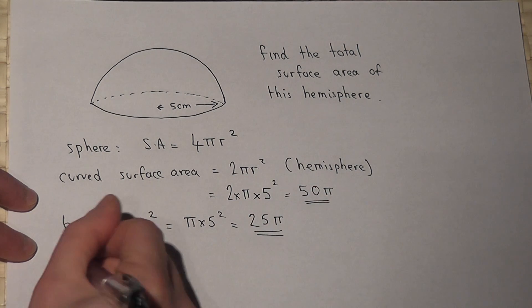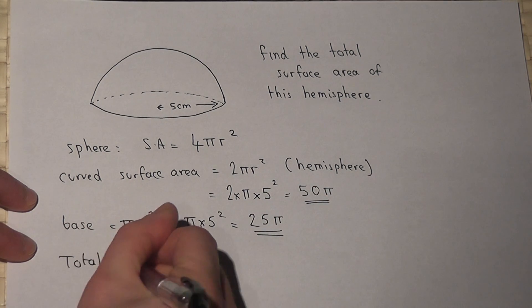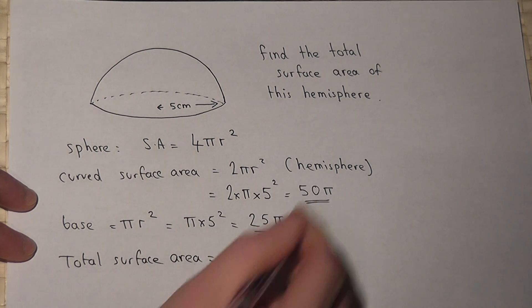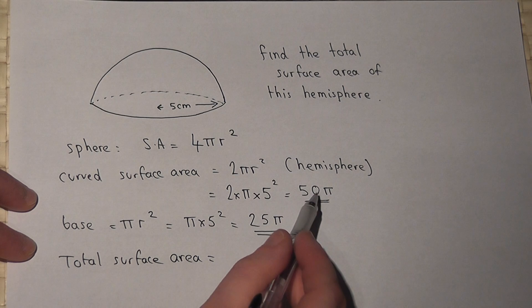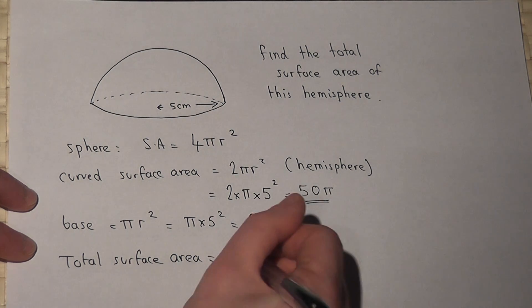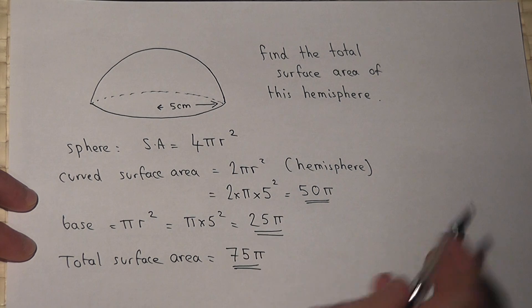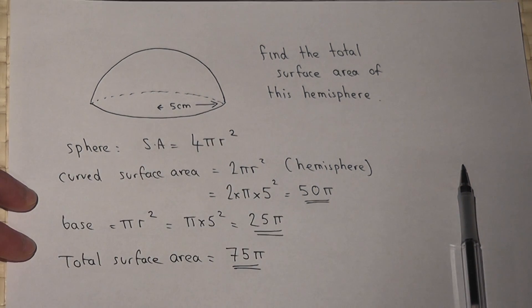So the total surface area will just be the sum of these two values. 50 pi plus 25 pi is 75 lots of pi.